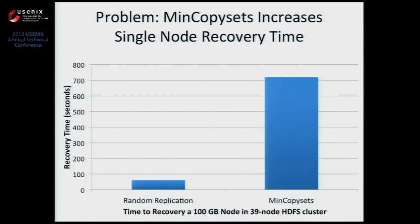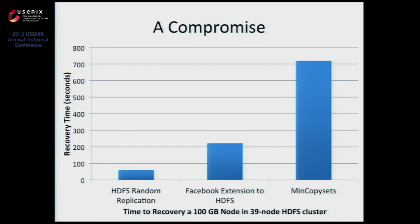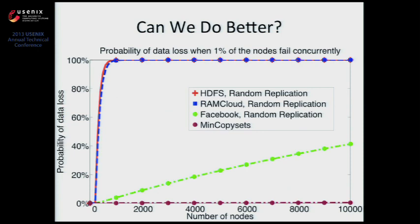Because of this issue, Facebook implemented an extension to HDFS as a compromise. Instead of replicating each chunk to random machines across the entire cluster, they chose random machines from a smaller subset of nodes they call a buddy group — basically a window of 10 nodes around each node — and only replicate the two other copies to that window. In terms of recovery time, this is much closer to random replication because you have 10 nodes to read from. In terms of data loss probability, it's a compromise — much better than random replication at large scale, but still a lot worse than min copy sets.